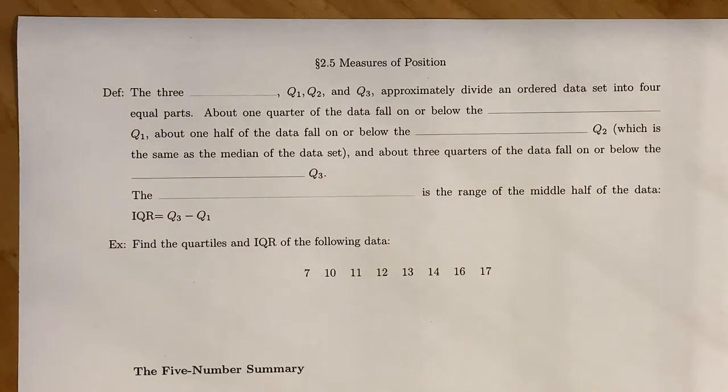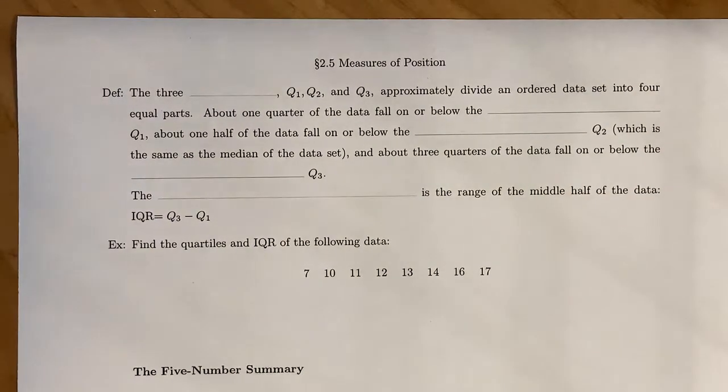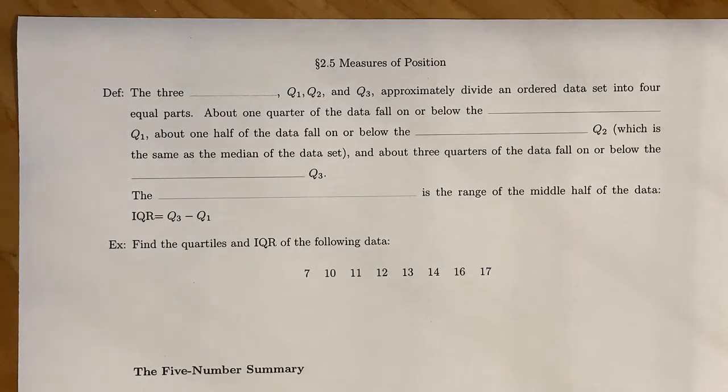In section 2.4 we studied the different measures of variation such as the variance and standard deviation which are great to associate when you have a mean. Now if you have a median, what we can do is start talking about these things called quartiles.